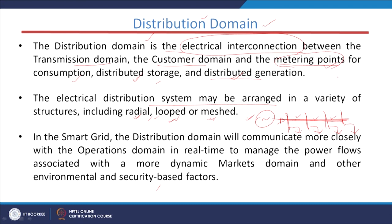We also have a looped structure where different buses have different sources or substations, and at every bus we have loads — this is a looped system. In our smart grid system we aim to penetrate renewable sources and storage systems. Whether it is a radial system, a looped system, or a meshed circuit, we can connect these renewable sources everywhere.